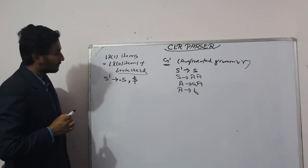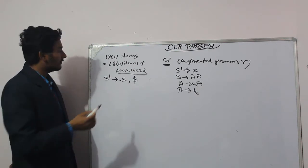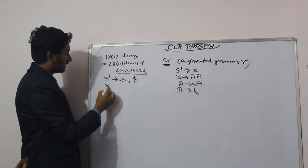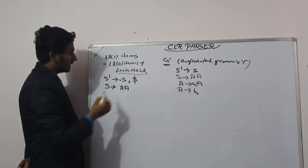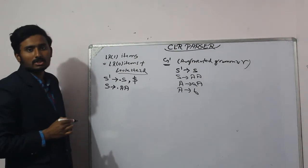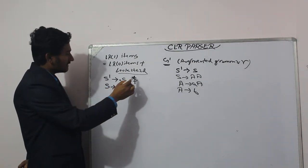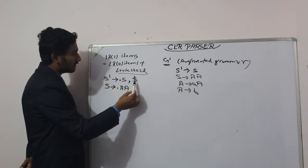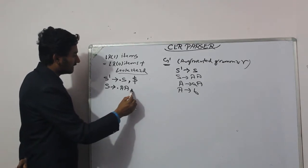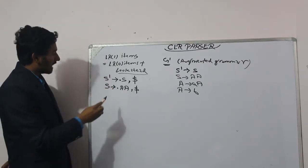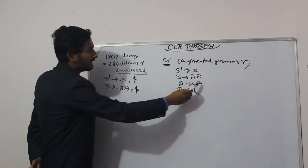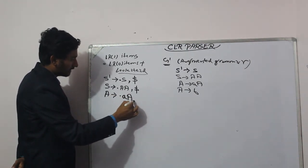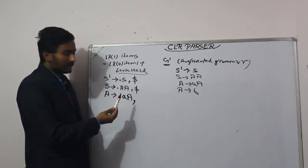Since S derives A A, we write S derives dot A A. We need to write the dot because we have scanned nothing initially. Now, after this S' derives dot S, after S there is only dollar, so FIRST(dollar) is dollar itself. After the dot we have non-terminal A, and A produces small a capital A, so we write A derives dot a A.